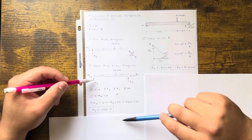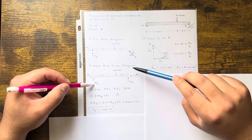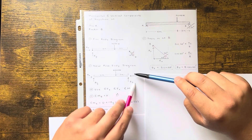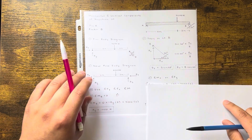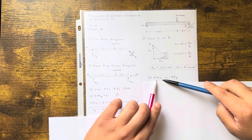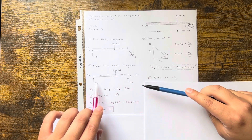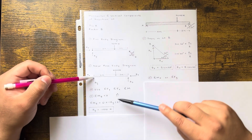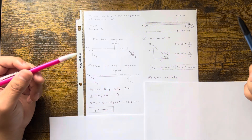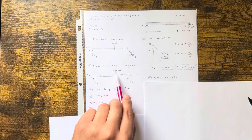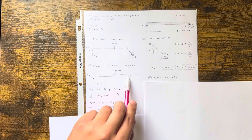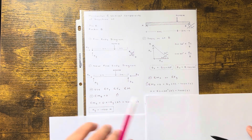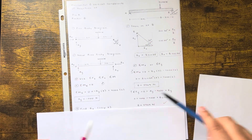Now that we have Ay, we can do sum of forces in the y direction because now there's only one unknown left — By. You could also take the sum of moments about A to find By, and you'll get the same answer either way. If you do the moment about A: By produces a positive counterclockwise moment, 4,000 produces a negative clockwise moment.